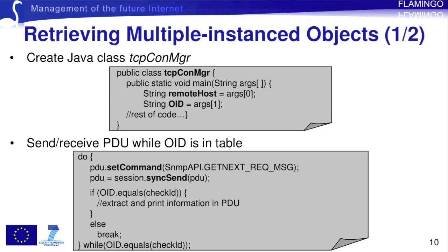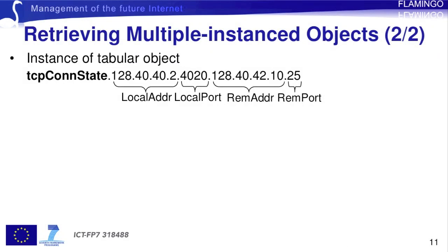Inside the brackets of the if statement, we extract and print the information in the PDU as we did in the previous exercise. This is an example OID of a specific TCP connection. The first part, TCPConnectionState, is the object name, which if you check the SNMP MIB has an OID of .1.3.6.1.2.1.6.13.1.1. This is the initial table OID we can provide as the target. The second and third parts are the local address and local port of the connection respectively, and the fourth and fifth parts are the remote address and port. Together, these parts make a unique OID for a TCPConnection table entry.